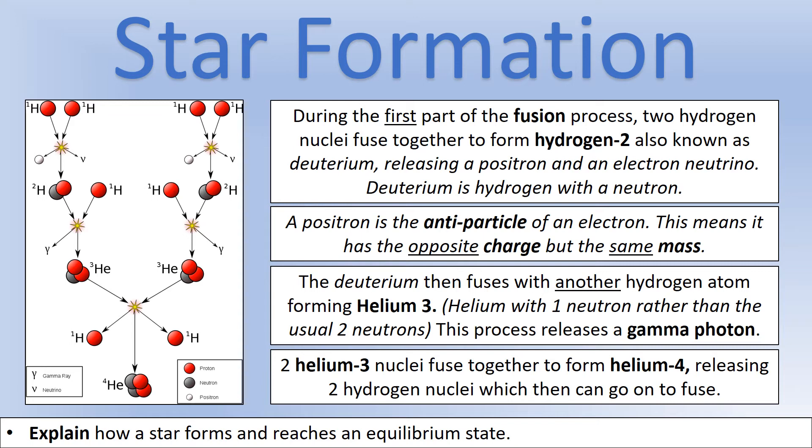A positron is the antiparticle of an electron. It has a positive charge but the same mass as an electron. The next stage is deuterium fuses with another hydrogen atom and that forms helium-3, helium with only one neutron, not two. But that stage releases a gamma photon, which will be critical in forming the equilibrium condition of a star.